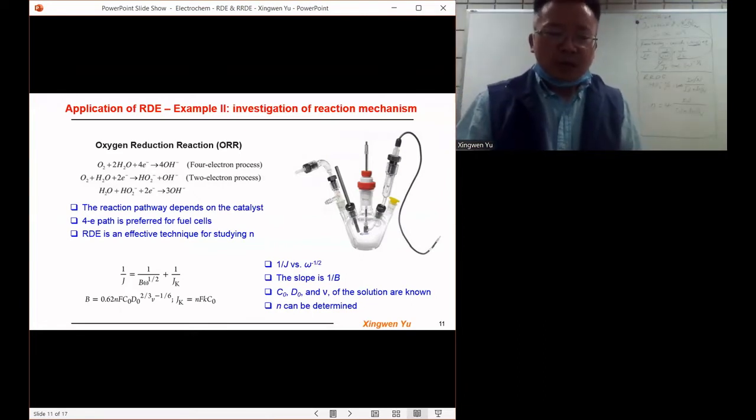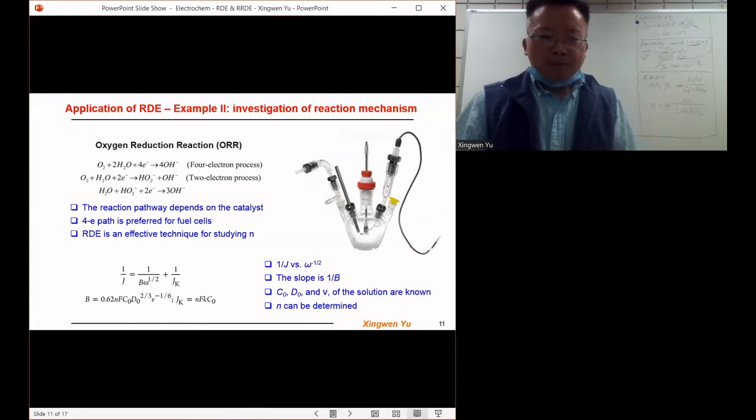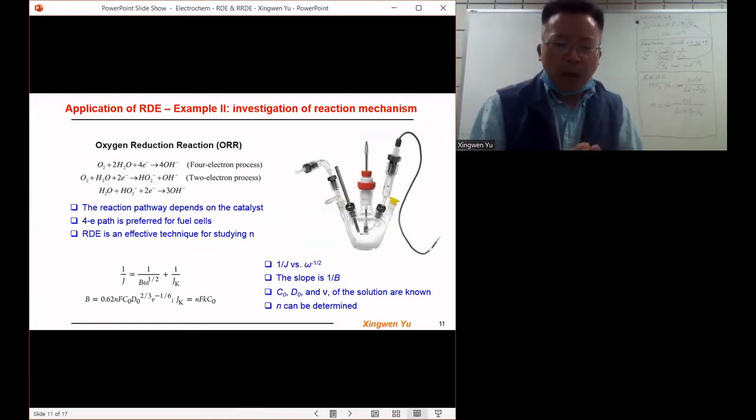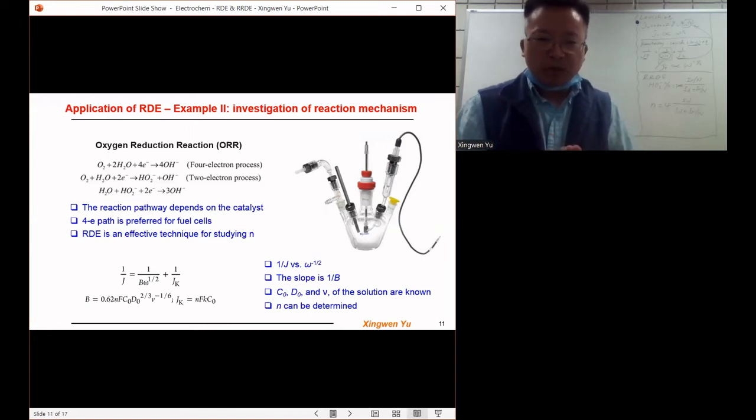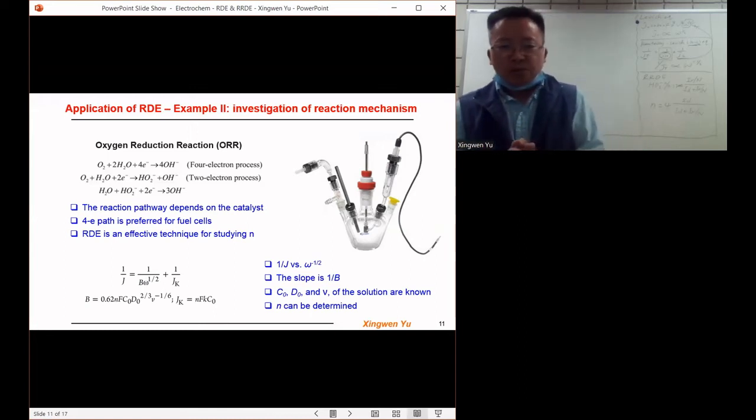The oxygen reduction reaction can follow two pathways: the four electron pathway and the two electron pathway.